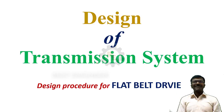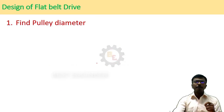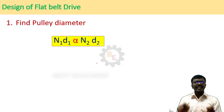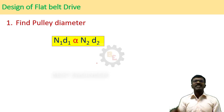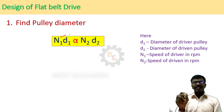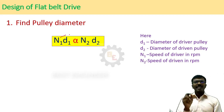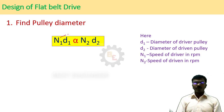Let us see the design procedure for flat belt drive. First, we have to find the pulley diameter. There is a ratio: the product of speed and diameter is proportional to the speed and diameter of the other pulley. Here D1 is the diameter of the driver pulley, D2 is the diameter of the driven pulley, N1 is the speed of the driver, and N2 is the speed of the driven. This product of the driver is equal to the product of the driven.